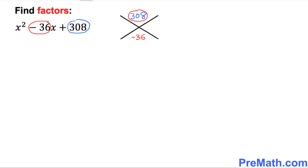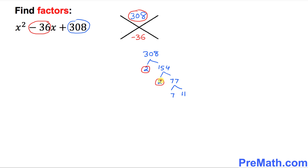Now find the factors of 308. We can write 308 as 2 times 154, then 154 as 2 times 77, and 77 as 7 times 11. So 308 equals 2 times 2 times 7 times 11.